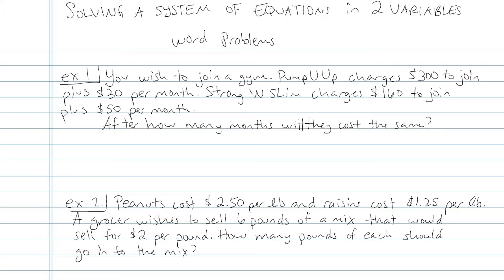This first example is about joining a gym membership. The first one charges $300 to join plus $30 per month. It's called Pump You Up. The second is called Strong and Slim. It charges $160 to join plus $50 per month. After how many months will they cost the same? Well, you can see that Pump You Up is expensive to join but then cheaper per month, so it makes sense that some people might say, oh, Pump You Up is actually cheaper per month as opposed to the other one. Well, for each one, I'm going to write an equation in y equals mx plus b form. Y will stand for cost.